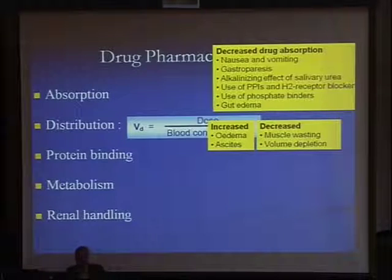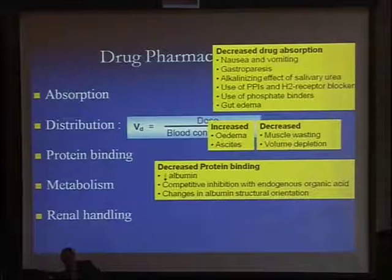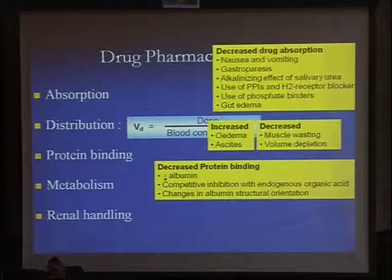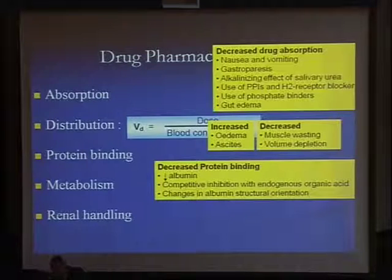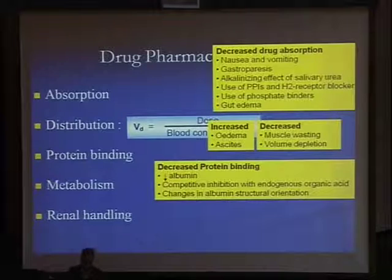What about protein binding? There is going to be a reduction in protein binding because we have reduced albumin due to malnutrition, infection, etc., and because we have competitive inhibition with endogenous organic acids which accumulate in uremia, and because we have changes in albumin structure and orientation — again, reduced by uremia. So protein binding will be reduced.